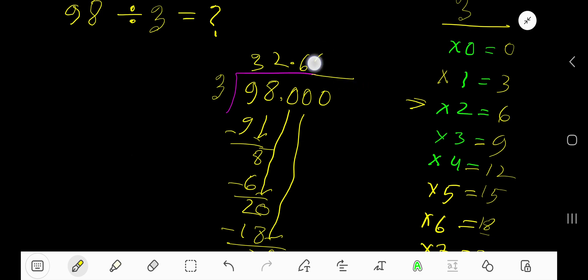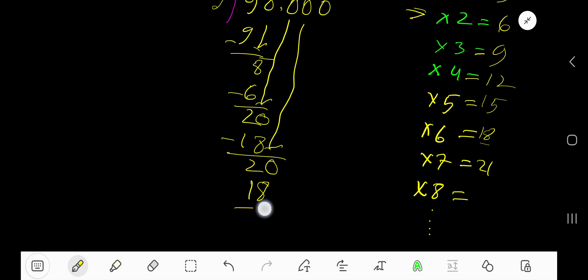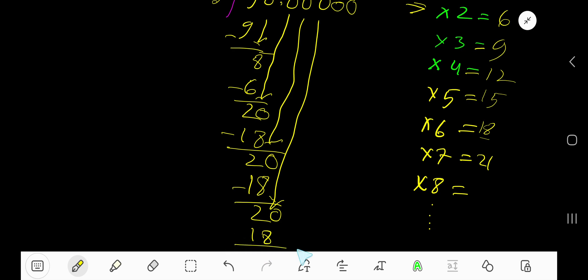6 times 3 is 18, subtract to get 2. Bring down the next 0. You can add any number of zeros. Again you can write 6 here: 6 times 3 is 18, subtract to get 2.